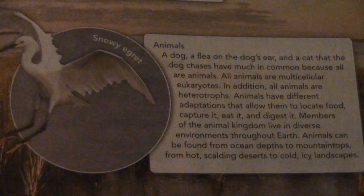Animals. A dog, a flea on the dog's ear, and a cat that the dog chases all have much in common because all are animals. All animals are multicellular eukaryotes. In addition, all animals are heterotrophs. Animals have different adaptations that allow them to locate food, capture it, eat it, and digest it. Members of the animal kingdom live in diverse environments throughout Earth. Animals can be found from ocean depths to mountaintops, from hot, scalding deserts to cold, icy landscapes.